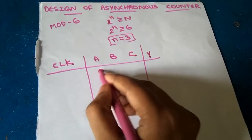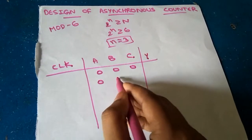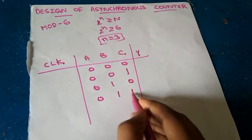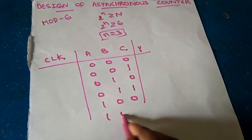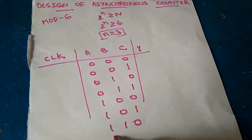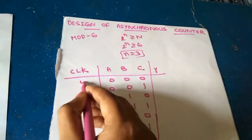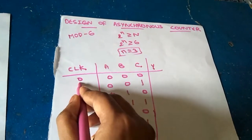So 3 variables means we will get up to 7: 000, 001, 010, 011, 100, 101, 110, 111. These are the inputs of A, B, C and clock pulse. 0 first one, when 0 clock pulse is given, no change in the input.